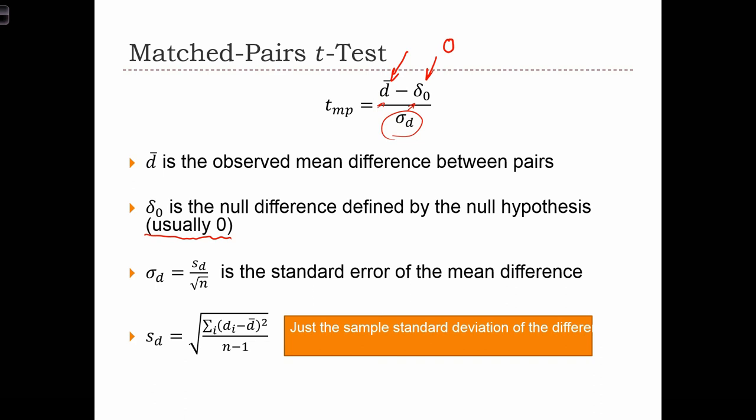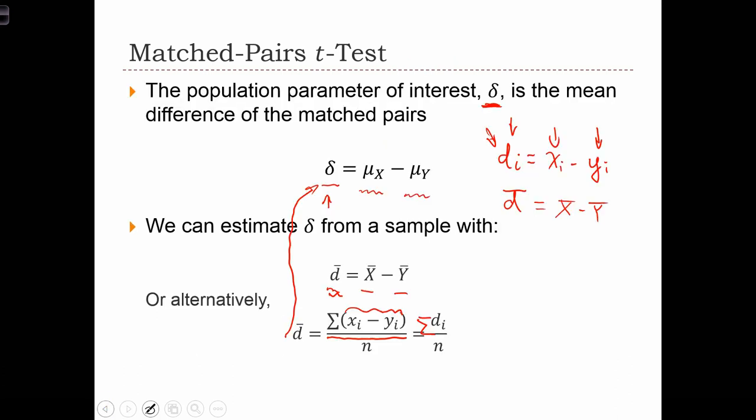The standard error of the differences is simply the standard deviation of the d statistic divided by root n. Remember, this d statistic is the difference between each xᵢ and yᵢ. So if we can create this variable, the dᵢ's, all we have to do is find the standard deviation of this new variable, and that's s sub d.